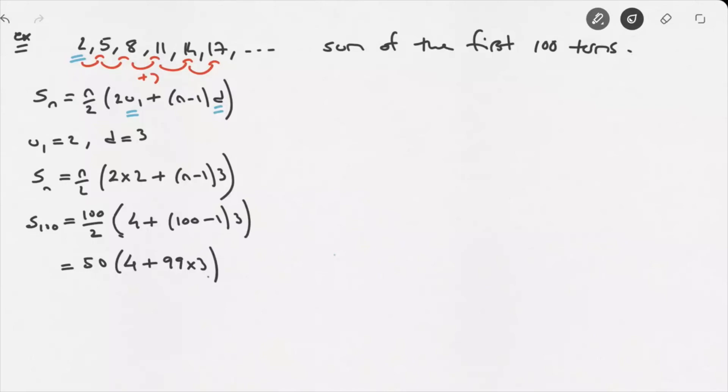Carrying on, this leads us to 50 times 4 plus 297, which leads us to 50 times 301. And you can go ahead and check with your calculator. 50 times 301 should equal 15,050. So the sum of the first 100 terms of this arithmetic sequence is equal to 15,050.